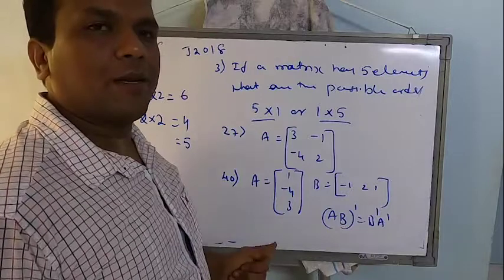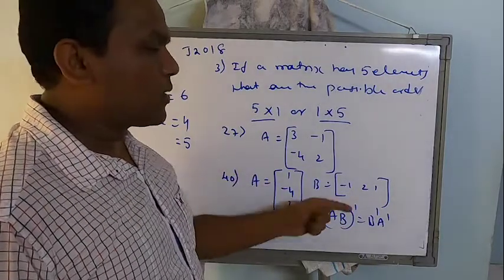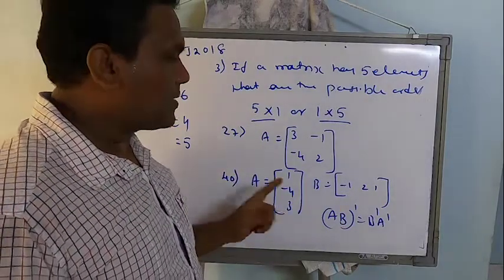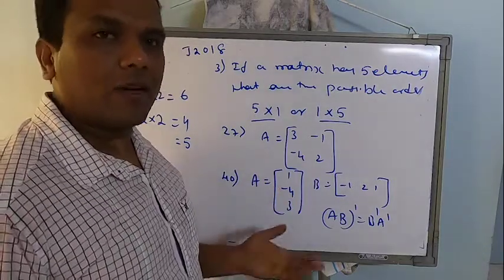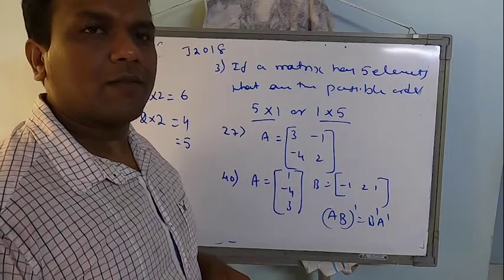Even though the problem looks so simple, most of the students will fail to answer. The reason is quite simple: students will get confused once they see one row and one column. They will forget the matrix multiplication itself.